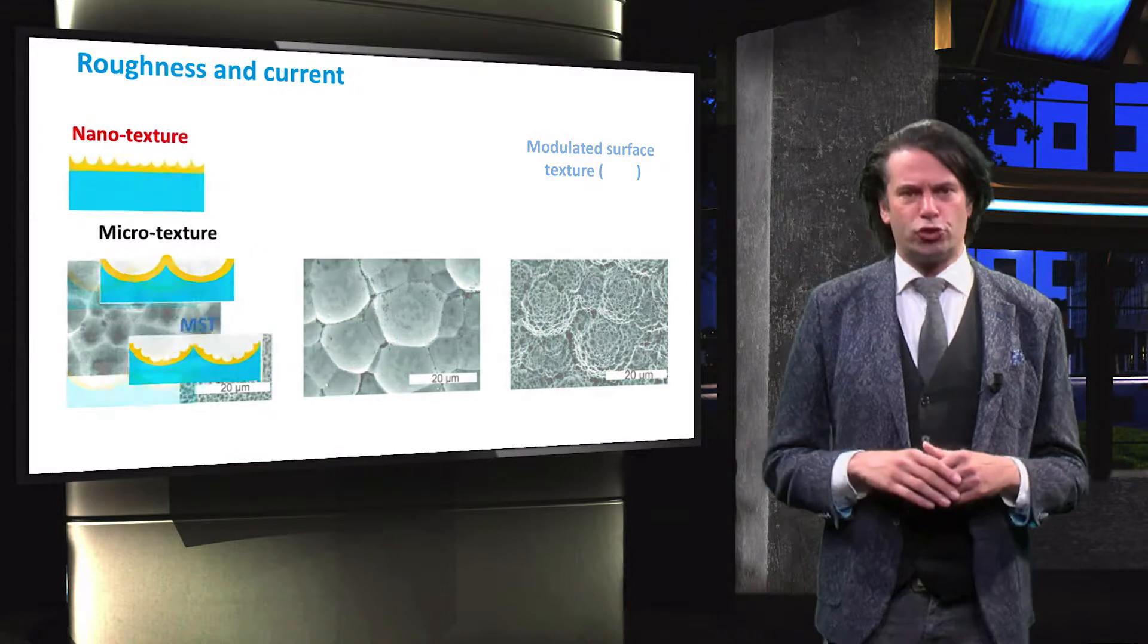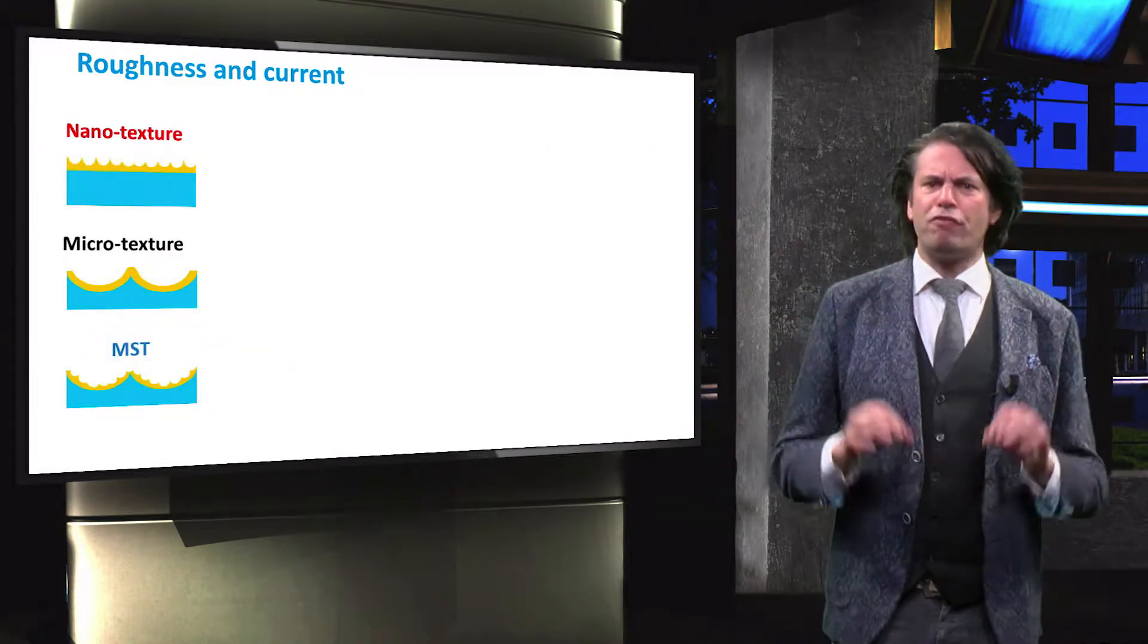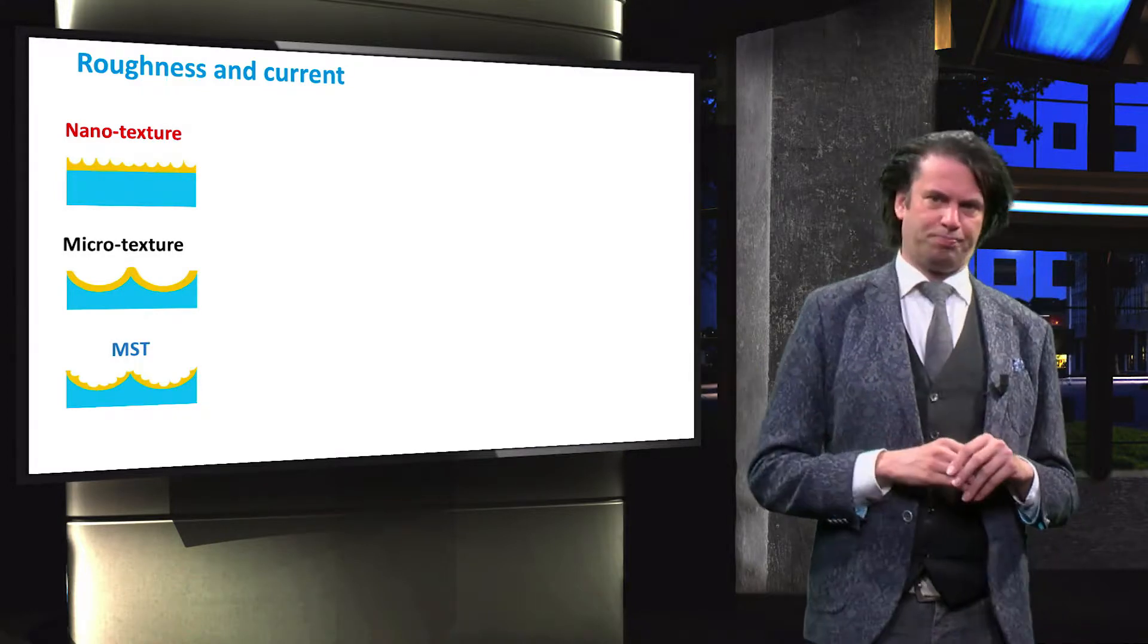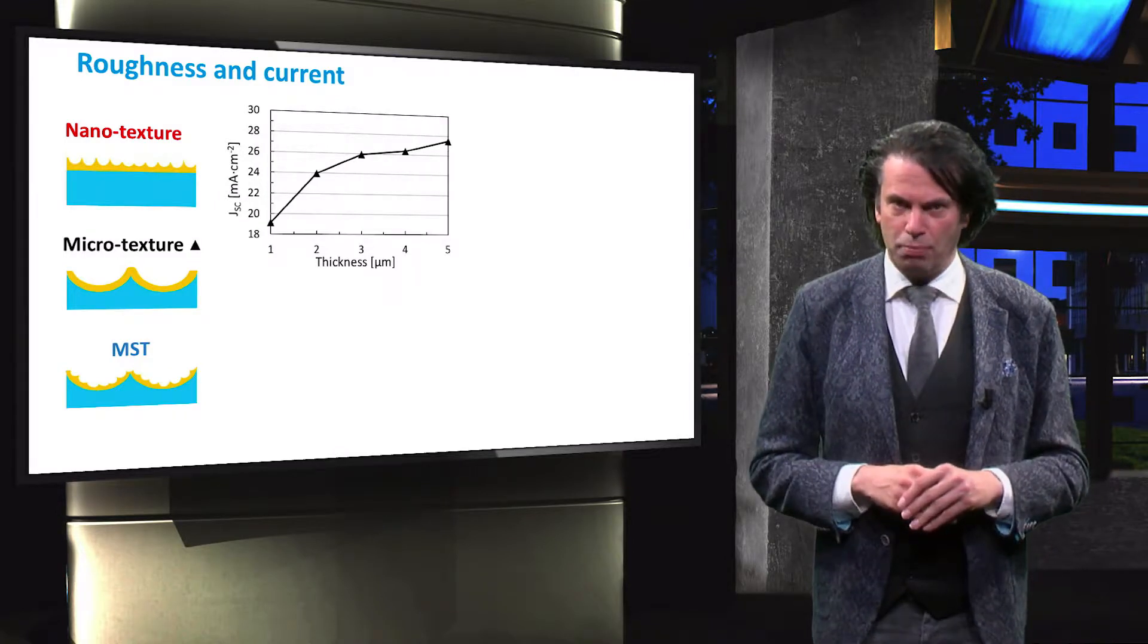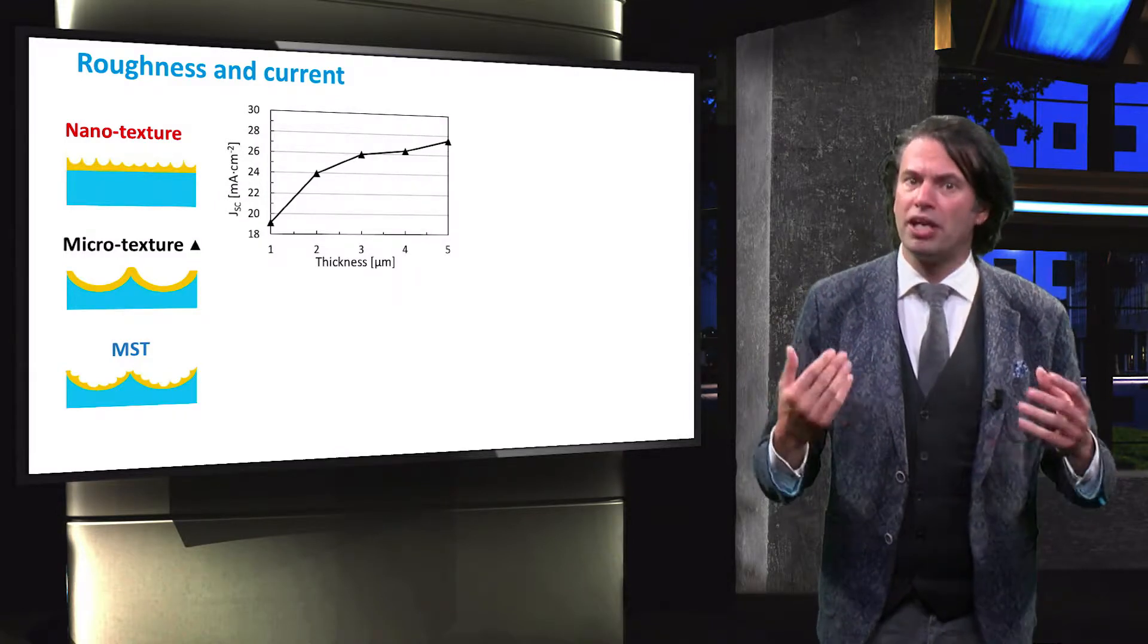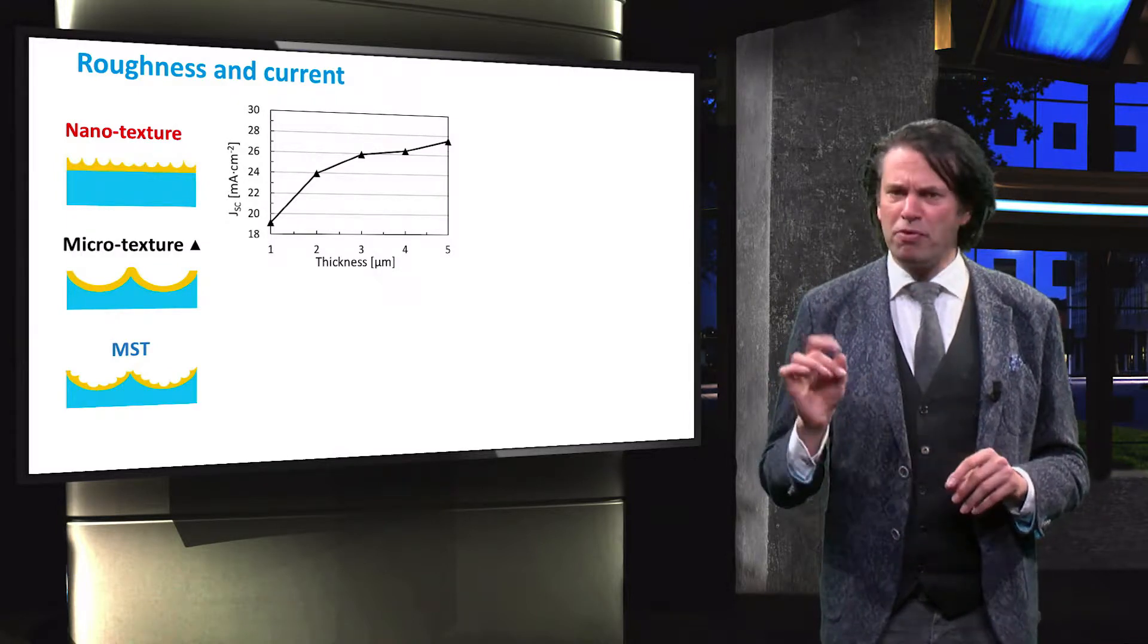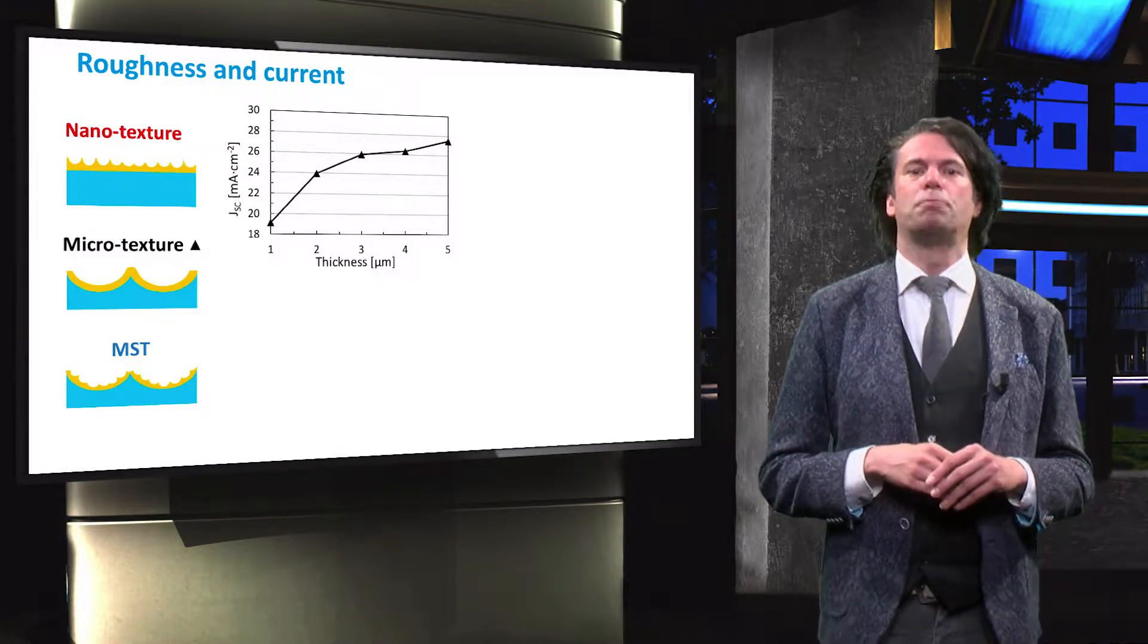Since the goal of the surface roughness is to increase the light trapping in the cell, we will first investigate the short-circuit current density of the cell. The short-circuit current density of the micro-textured cell, plotted here as a function of the absorber layer thickness, increases with increasing absorber layer thickness. The shape of the curve matches that of the Lambert-Beer law for absorption.